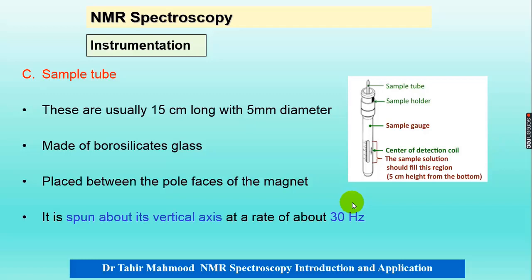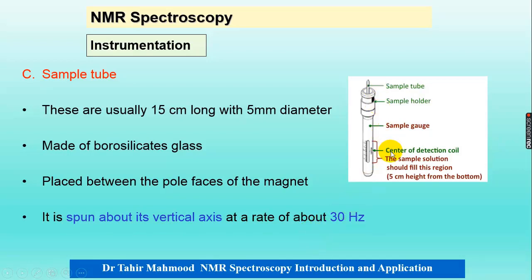The sample tube: in NMR spectroscopy, we mostly use the solution form or liquid sample. For sample preparation, we use solvents that are proton-free or contain deuterated isotopes of hydrogen. The tube is normally 50 centimeters long and 5 millimeters in diameter, made of borosilicate glass, placed between the poles of the magnet, and spun about its vertical axis at 30 hertz per second. The sample solution should be set in the region 5 centimeters high from the bottom.